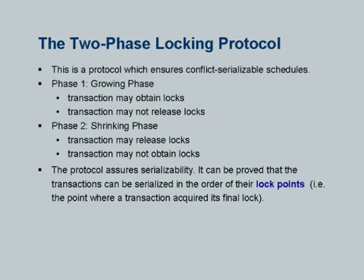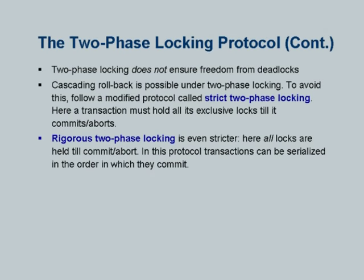It can be proven that the two-phase locking protocol guarantees serializability. The transaction serial order is defined by what is called the lock point — the point where the transaction acquired its last lock. After that, it cannot acquire or release any more. Alternatively, the lock point can be defined as just before the point where it released its first lock. These definitions come to the same thing and define the serial order.